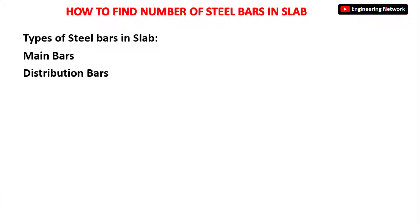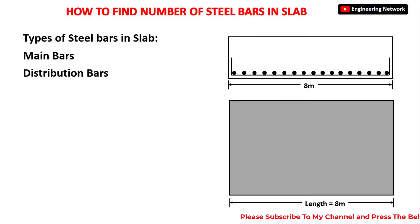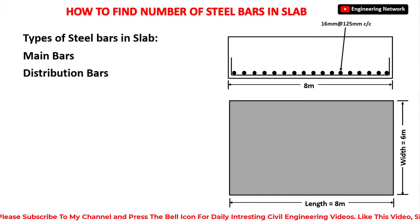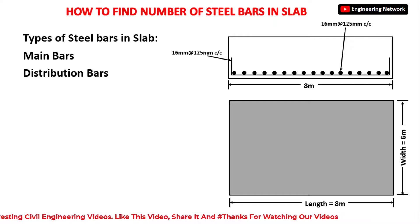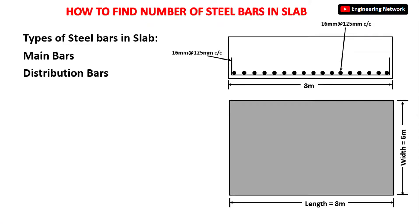Now let's suppose we have a slab as you can see on your screen. The length of this slab is 8 meters and the width of the slab is 6 meters. The diameter of both main bars and distribution bars used in this slab is 16 millimeters, and these bars are placed at 125 millimeter center-to-center distance, which means the spacing between two bars is 125 millimeters.